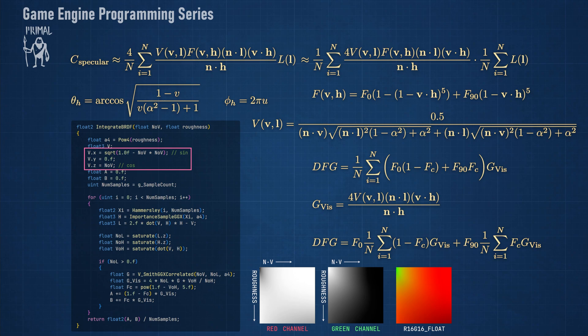First, we get the view vector from n dot v using a bit of trigonometry. In the for loop, we generate random numbers using the Hammersley function and construct the halfway vector from the random numbers and the roughness value using these relations.